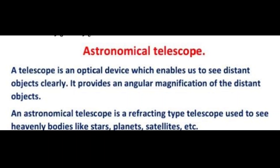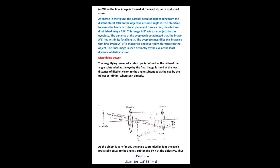The next optical device is the astronomical telescope. This device enables us to see distant objects clearly and provides angular magnification of distant objects. It is a refracting type telescope used to see heavenly bodies like stars, planets, and satellites. We will study two cases: first, when the image is formed at the least distance of distinct vision; and second, when the final image is formed at infinity.